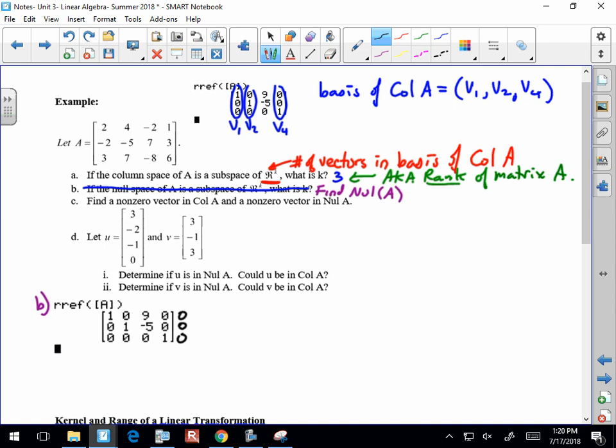So again, it's a solution to AX equals zero. We're looking at X1 equals negative nine X3, X2 equals five X3, and X4 equals zero, which would make X3 a free variable.